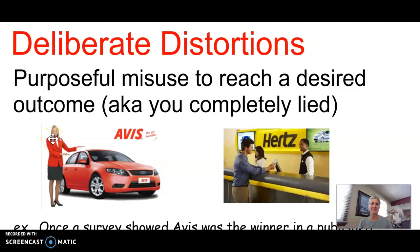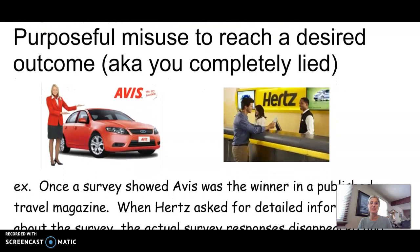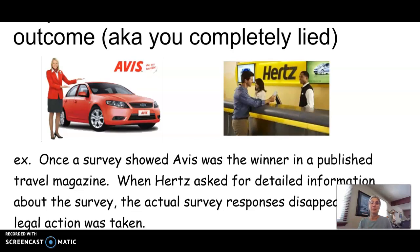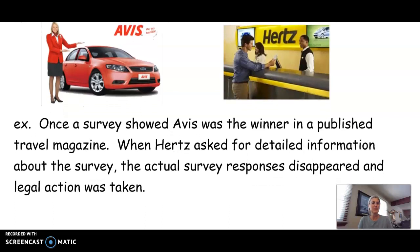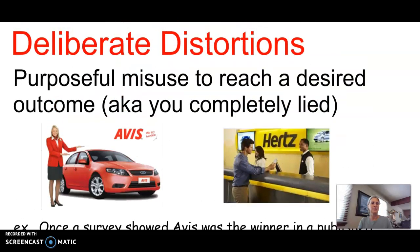And then deliberate distortions — sometimes it's just outright lying. Here's a true story: Avis misused information deliberately to make their competitor look bad. Once Hertz challenged Avis and a lawsuit began, the actual results disappeared. The actual results were gone. That is a deliberate distortion.